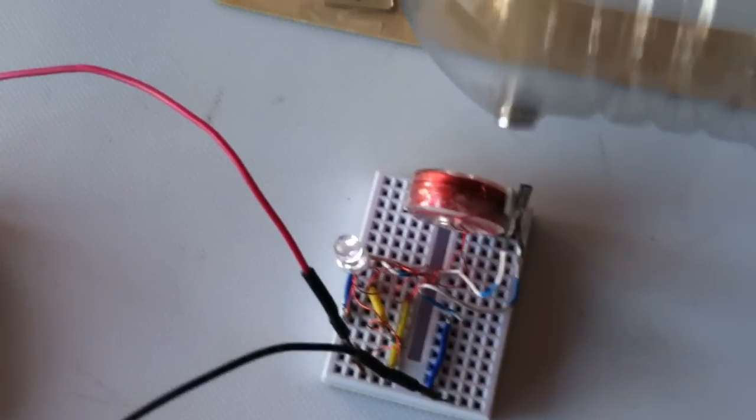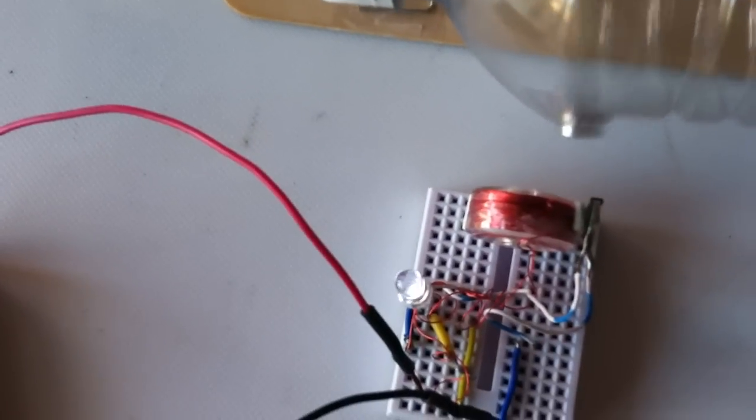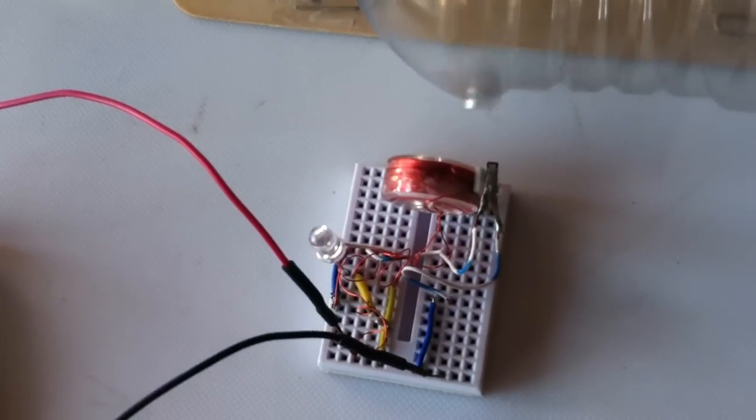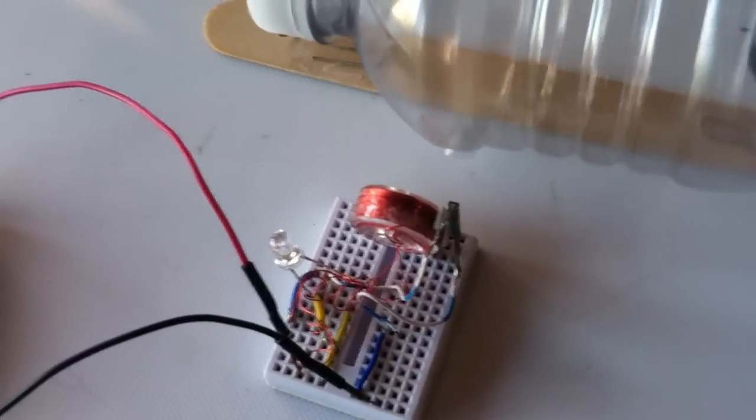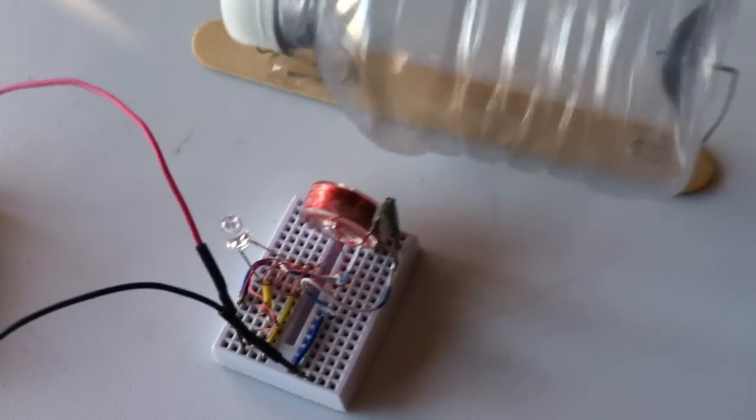And this is how the jewel thieves work. Same thing. They're using the collapsing field of the coil to light up the LED. It's a high-voltage, low-amperage deal.